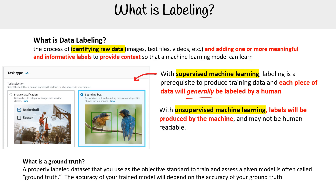One other thing I want to touch on is the term ground truth. This is a properly labeled dataset that you can use as the objective standard to train and assess a given model. The accuracy of your trained model will depend on the accuracy of your ground truth. Using Azure's tools, I never see them use the word ground truth — I see that a lot in AWS, and even this graphic here is from AWS. I just want to make sure you are familiar with all that.